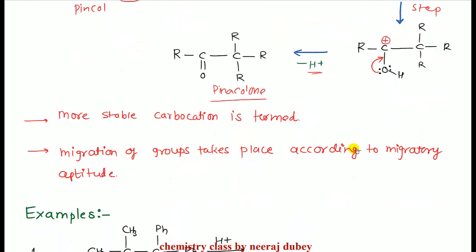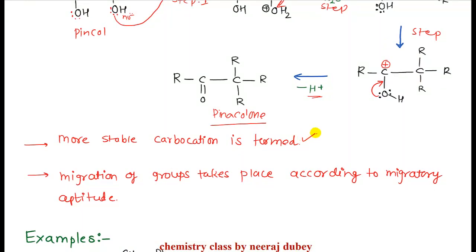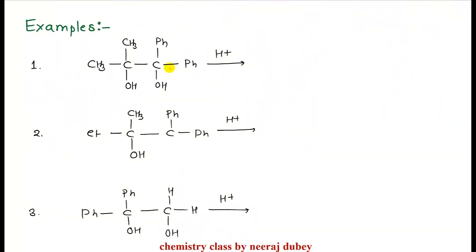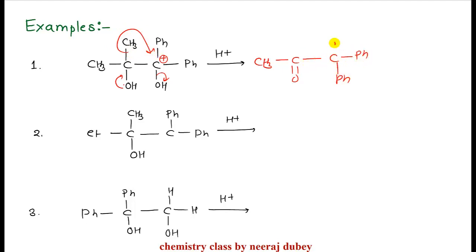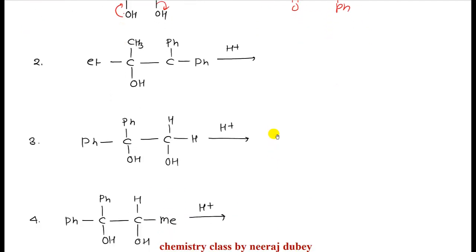Formation of pinacolone occurs. In the first step, migration of groups takes place according to migratory aptitude. The more stable carbocation will be formed here because it is stabilized by two phenyl groups. Since both alkyl groups are the same, shifting can occur from either. Finally, H proton shifts and the product is formed: CH3-C(=O)-CH3 — CH3 has migrated.